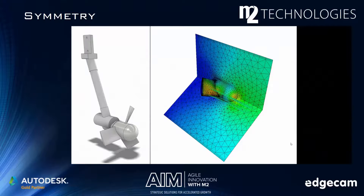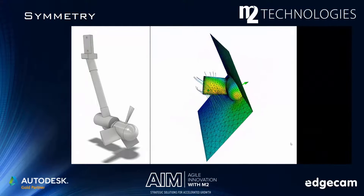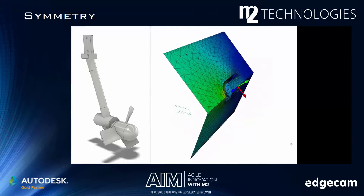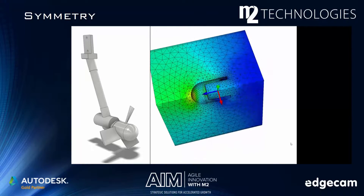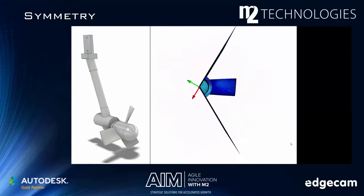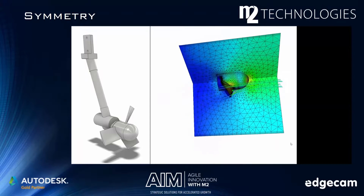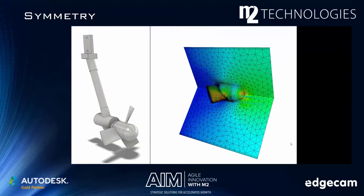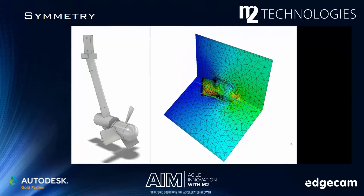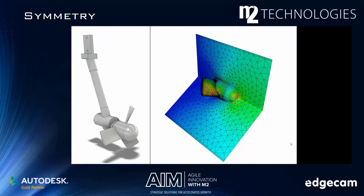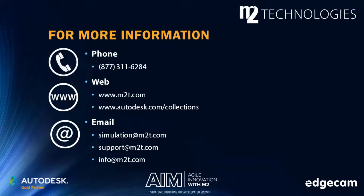And it doesn't have to be just one half. If the model is appropriate, I may get away with modeling a quarter or eighth. In the case of parts that exhibit a revolved pattern about an axis, I may only model one or two instances of this pattern. Just remember to apply slip symmetry on any fluid surface that touches the cutting planes.